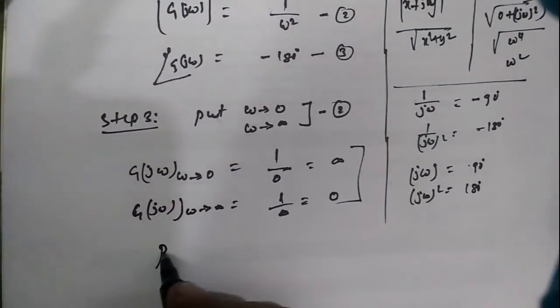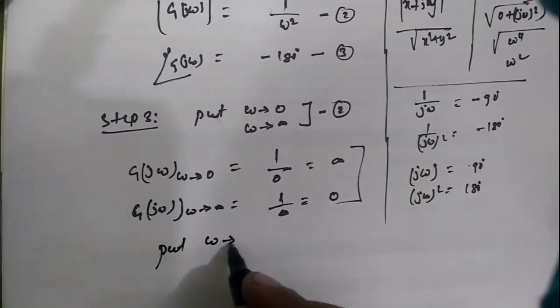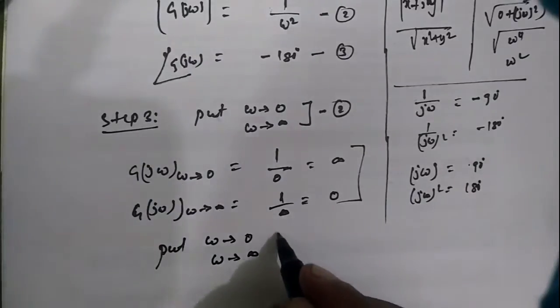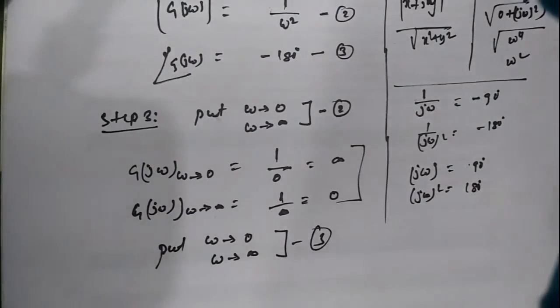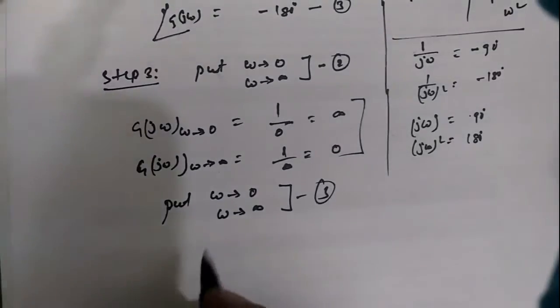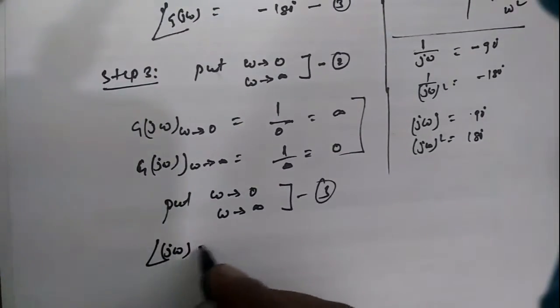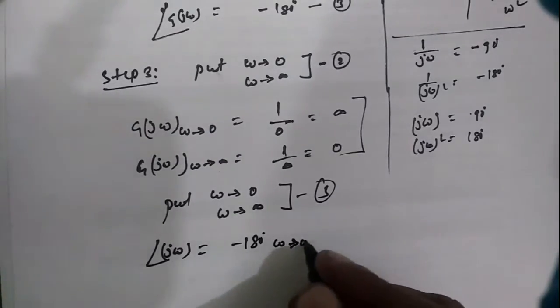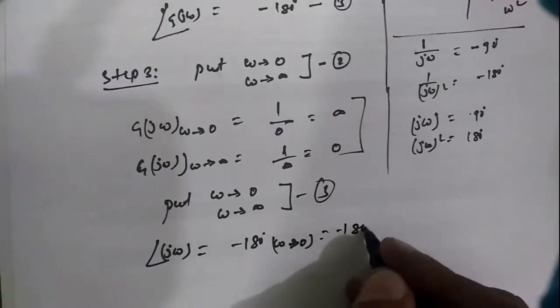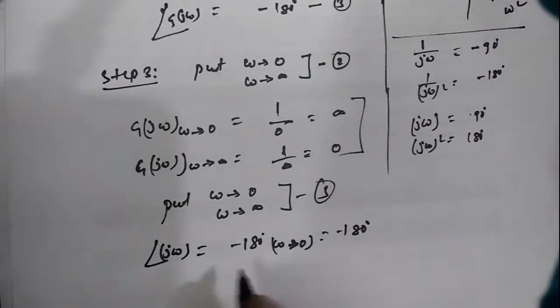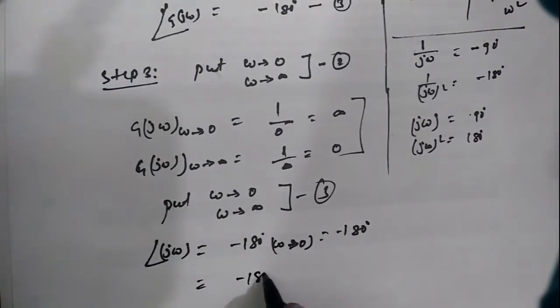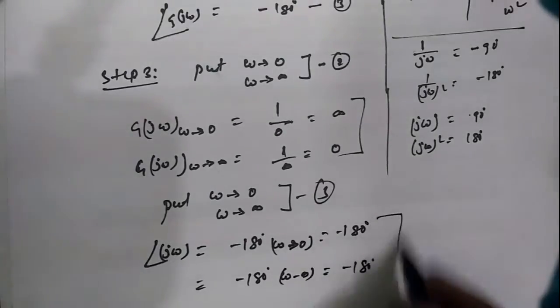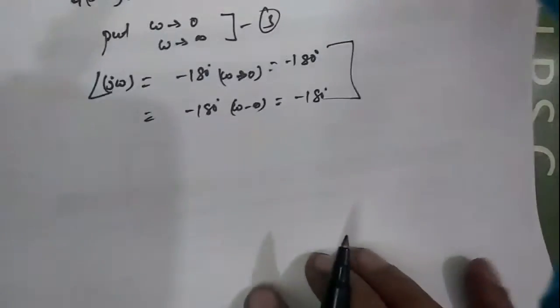We also substitute ω → 0 and ω → ∞ into equation 3 (the phase). Since equation 3 has no ω terms, the phase is −180° at both ω → 0 and ω → ∞. For convenience, we'll draw a small table.